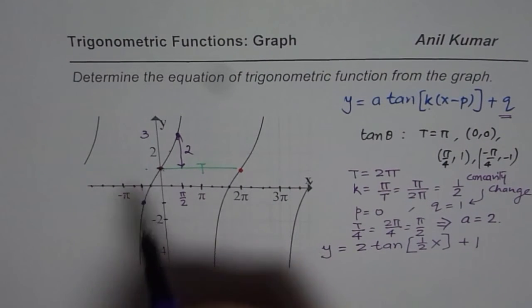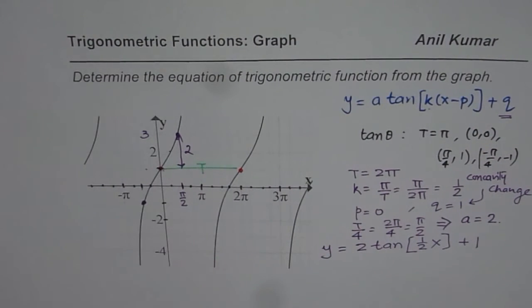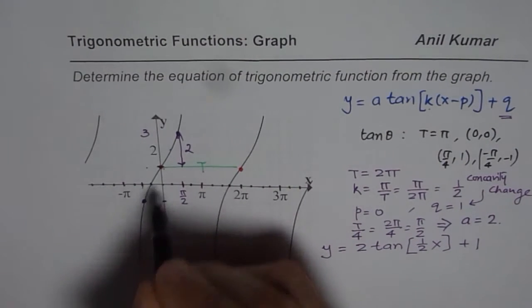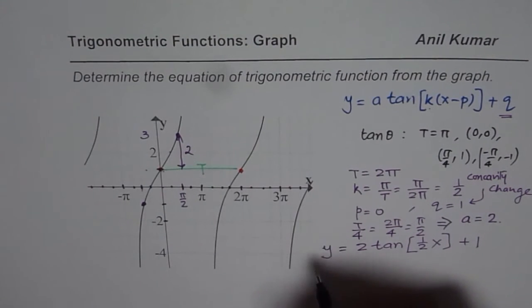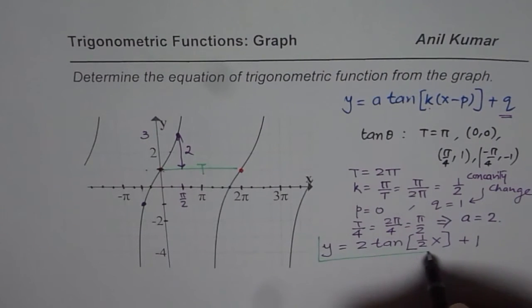Since the concavity changes at a point, which was supposed to be at the origin originally of tan theta, now it has moved 1 unit up. That means q is 1. So that is how you can get your required equation from the given graph.